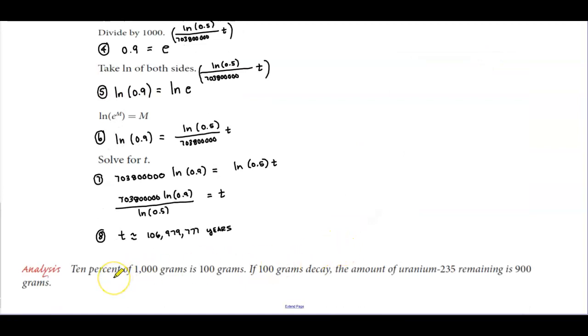So the analysis is that 10% of 1000 grams is 100 grams. And if 100 grams decay, the amount of uranium-235 remaining is 900 grams.